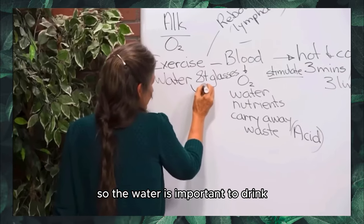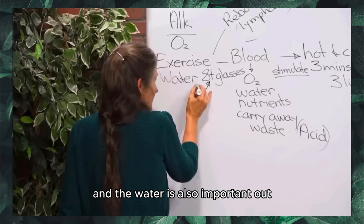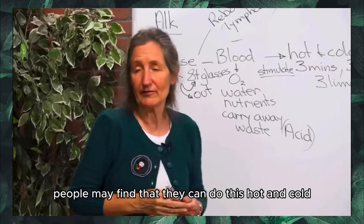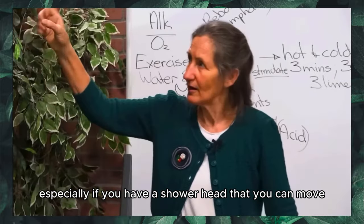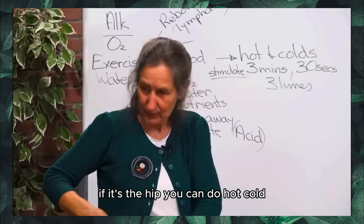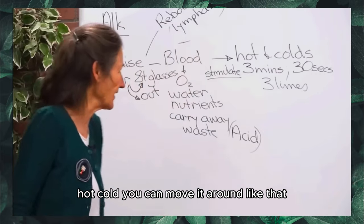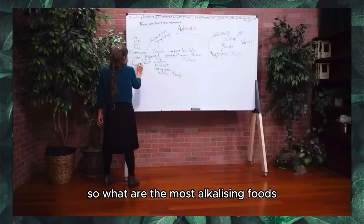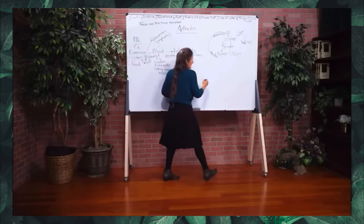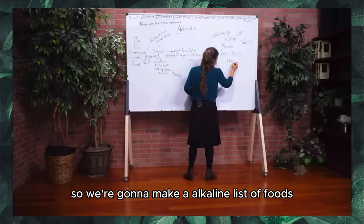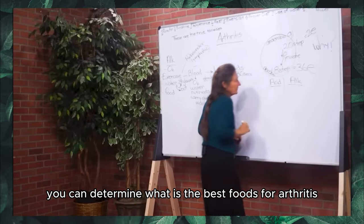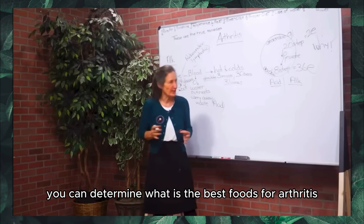Water is important to drink and also important externally through hydrotherapy. People may find they can do hot and cold in the shower — especially with a moveable shower head — moving it around the affected area. Now let's look at what alkalizes the body through food. We're going to make an alkaline list and an acid list, and by looking at this acid-alkaline list you can determine the best and worst foods for arthritis.